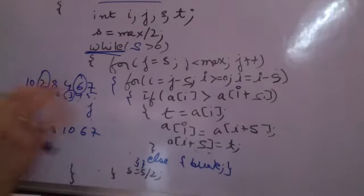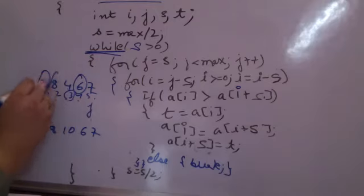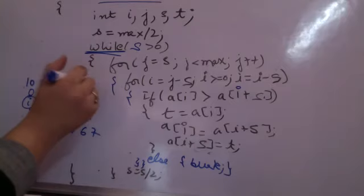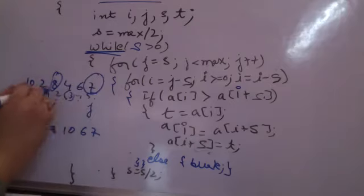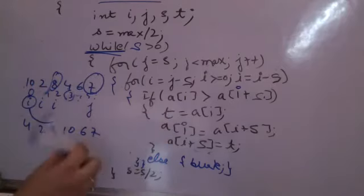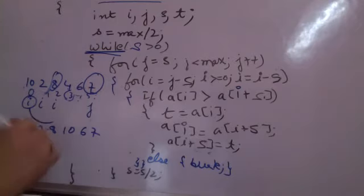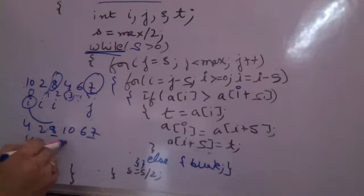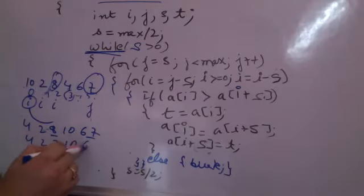Now j becomes five. J less than six is again true. I becomes two. I compare eight with seven. When I am comparing eight with seven, this condition eight greater than seven is true. I will again swap the elements. These two are swapped. So the new array becomes four, two, seven, ten, six and eight.